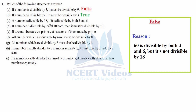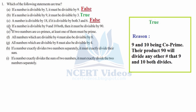Statement C: a number is divisible by 18 if it is divisible by both three and six. This is false. The reason is we can take 60, which is divisible by three and six, but it is not divisible by 18, so C is false.